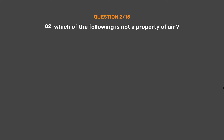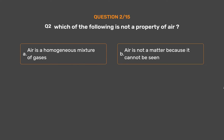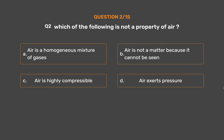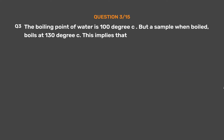Question number two: Which of the following is not a property of air? Option A: air is a homogeneous mixture of gases. Option B: air is not a matter because it cannot be seen. Option C: air is highly compressible. Option D: air exerts pressure. The correct answer is option B: air is not a matter because it cannot be seen.